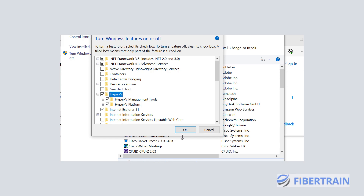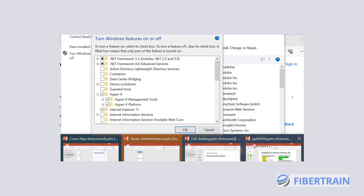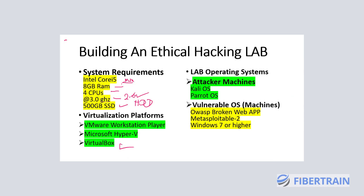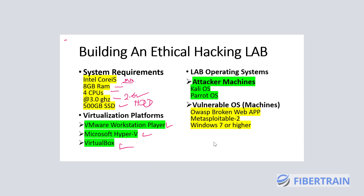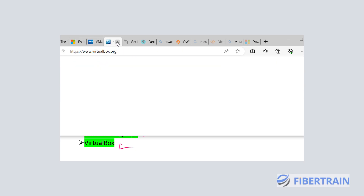The third virtualization option is VirtualBox. So I've shown you VMware Workstation Player and Hyper-V, which is already built into Windows 10 and 11 Professional or Enterprise editions. VirtualBox can also be downloaded — I'll be sharing the download links in a moment.